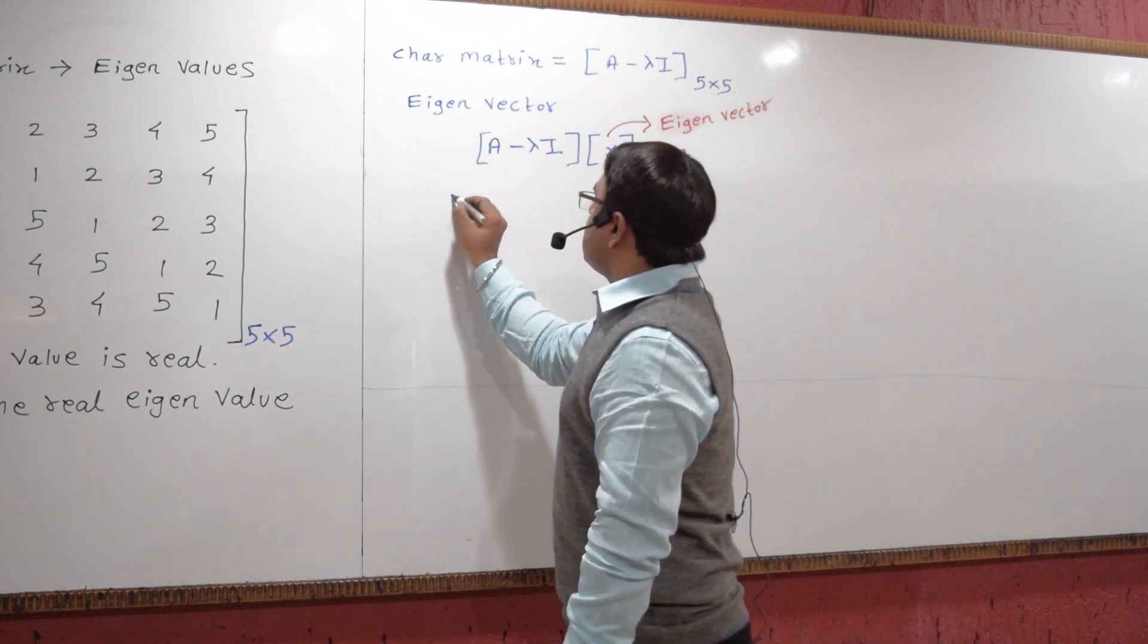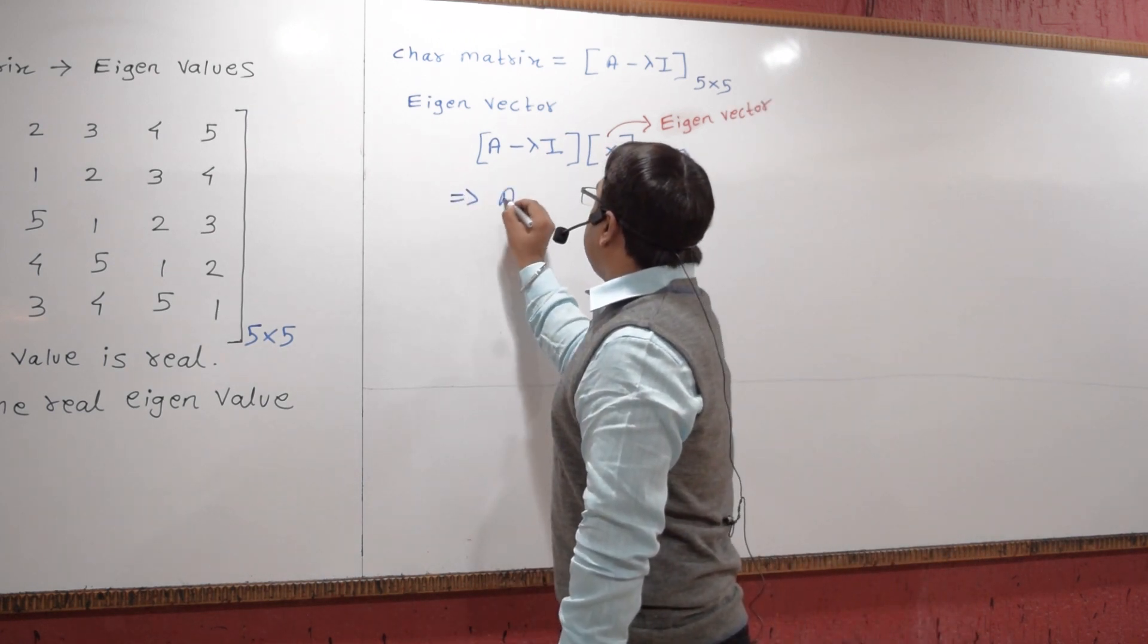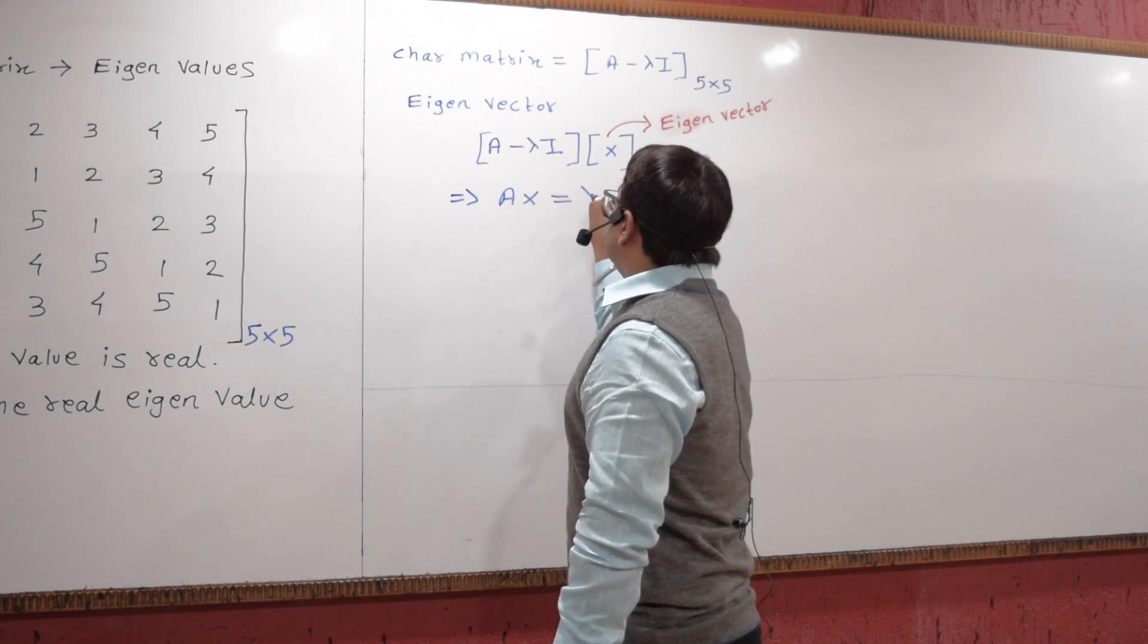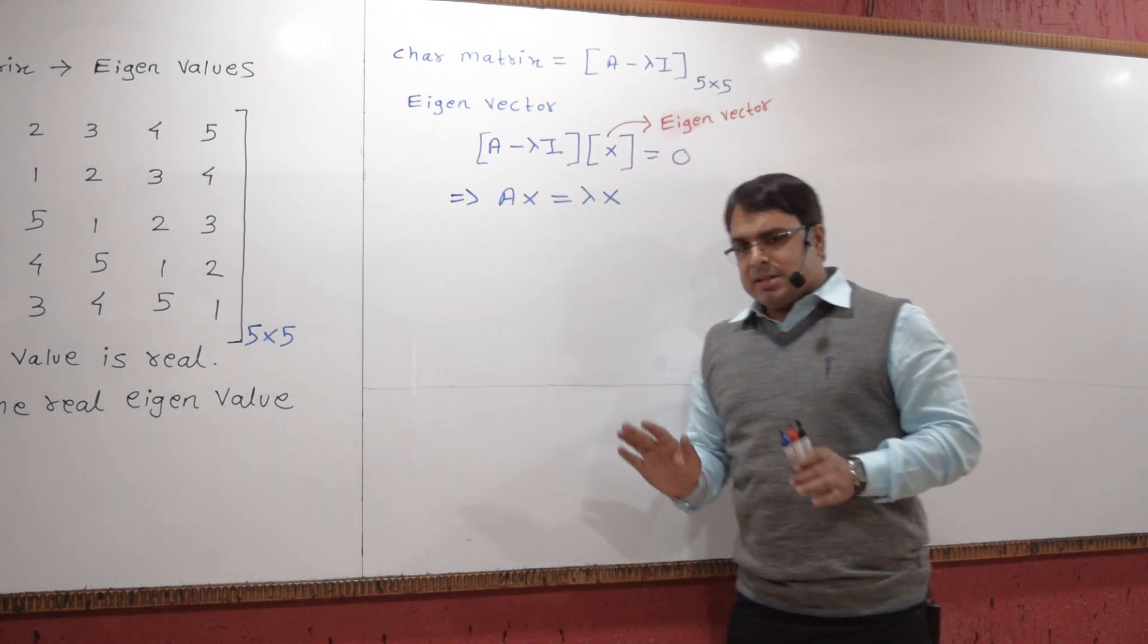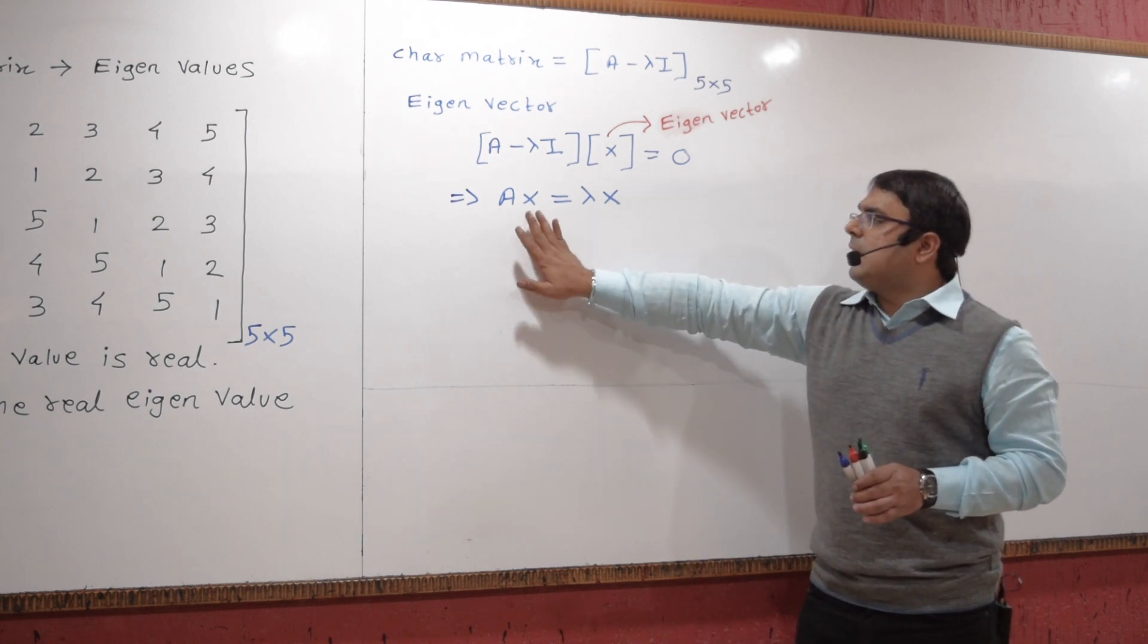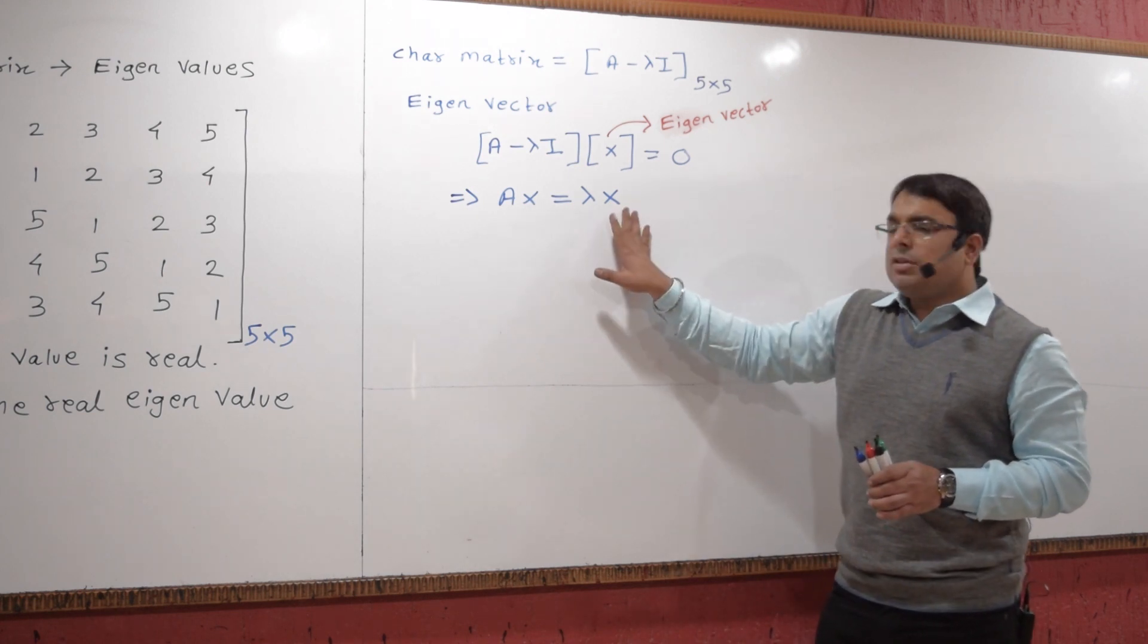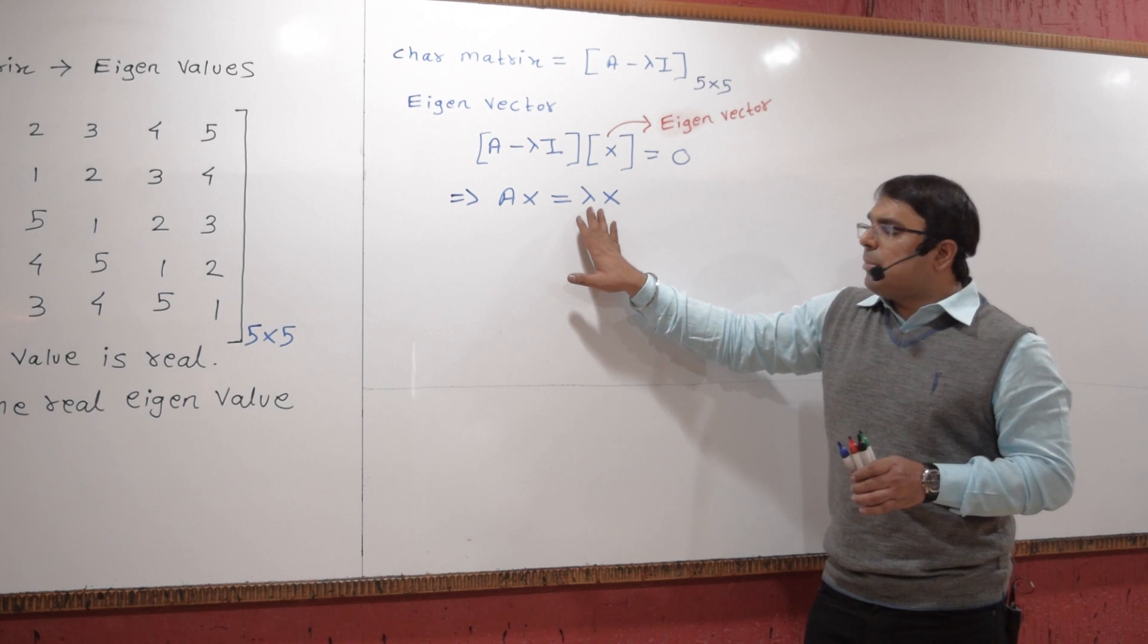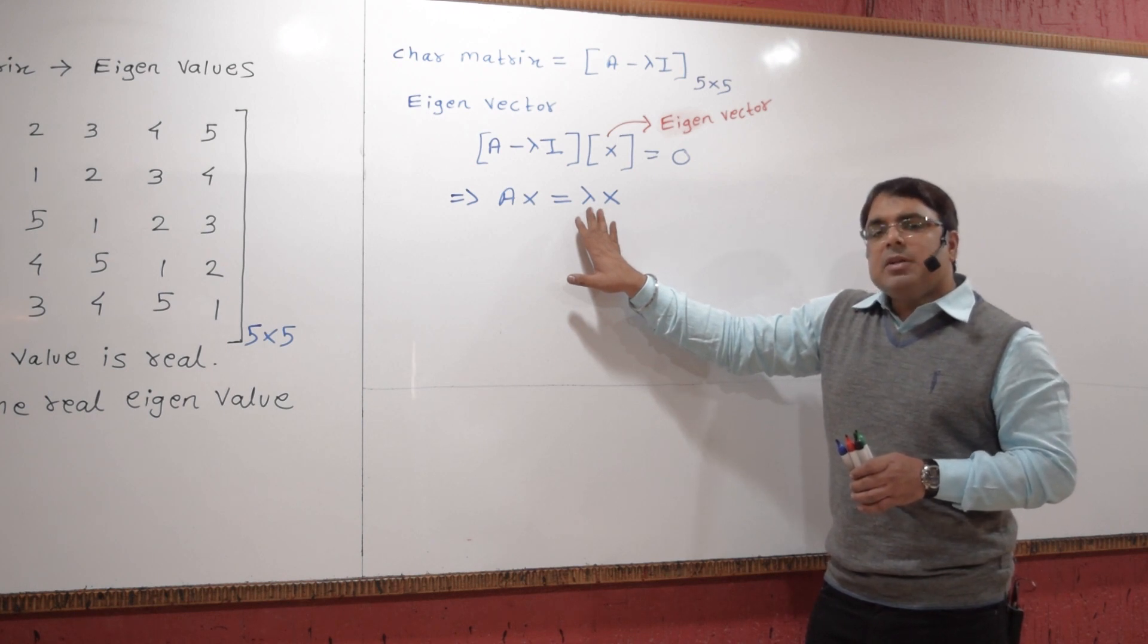This will give us A times X equals lambda times X. In short, X is our eigenvector, and the value of lambda for which it satisfies will be the eigenvalue.